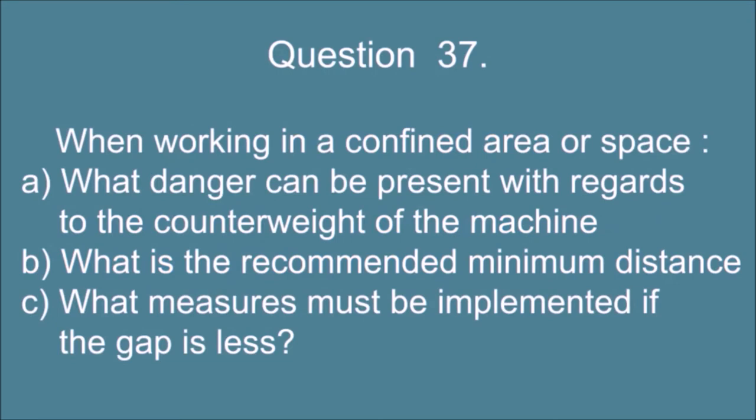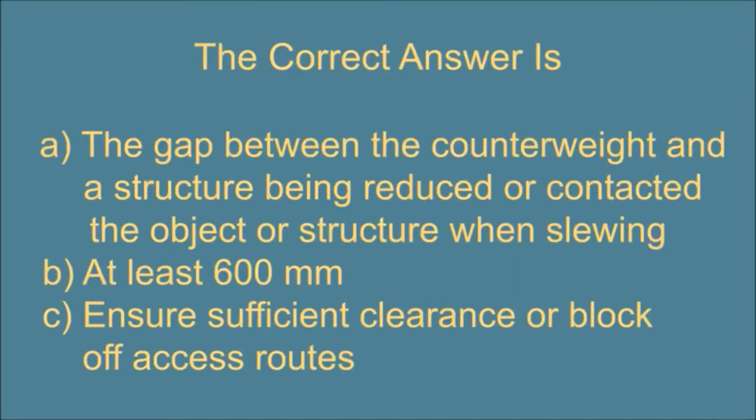Question 37. When working in a confined area or space, a) what danger can be present with regards to the counterweight of the machine, b) what is the recommended minimum distance, c) what measures must be implemented if the gap is less? The correct answer is: a) the gap between the counterweight and a structure being reduced or contacted the object or structure when slewing, b) at least 600 millimeters, c) ensure sufficient clearance or block off access routes.